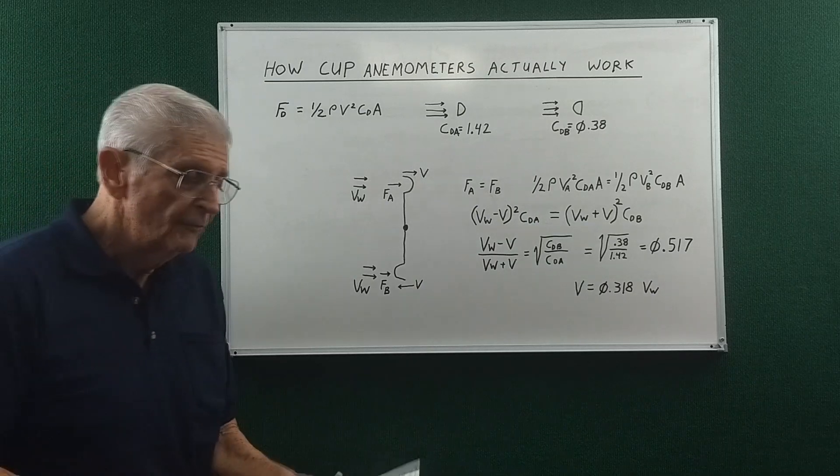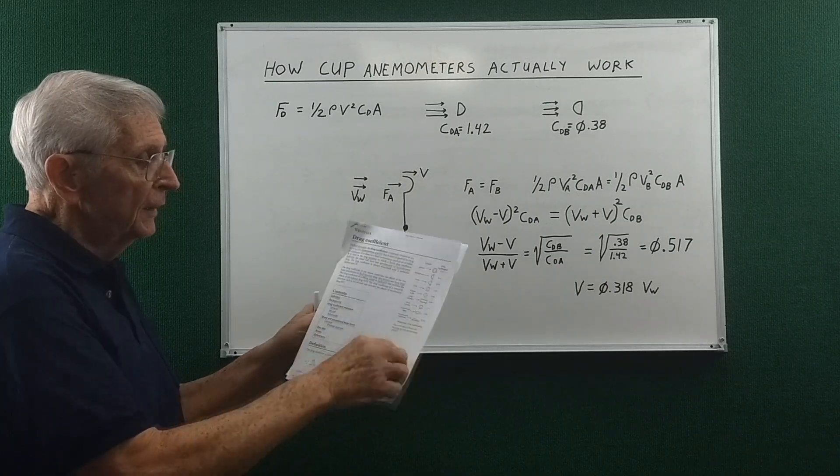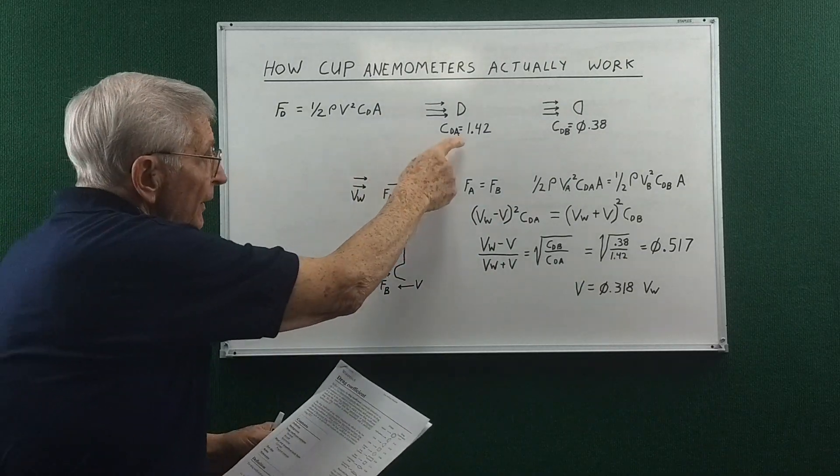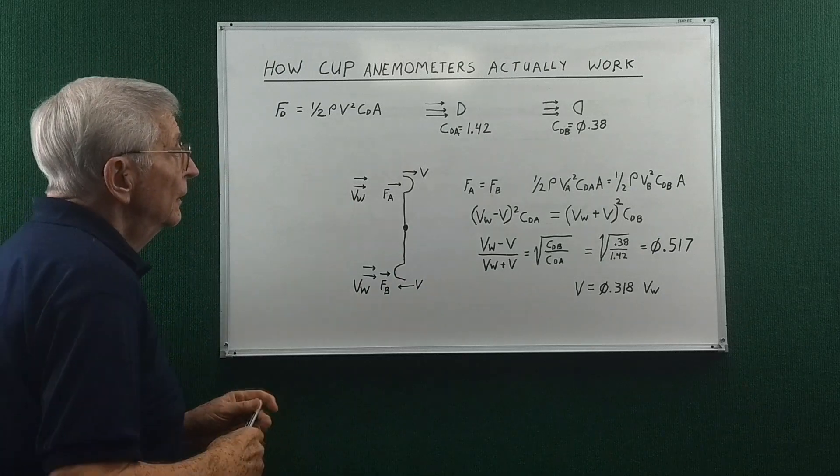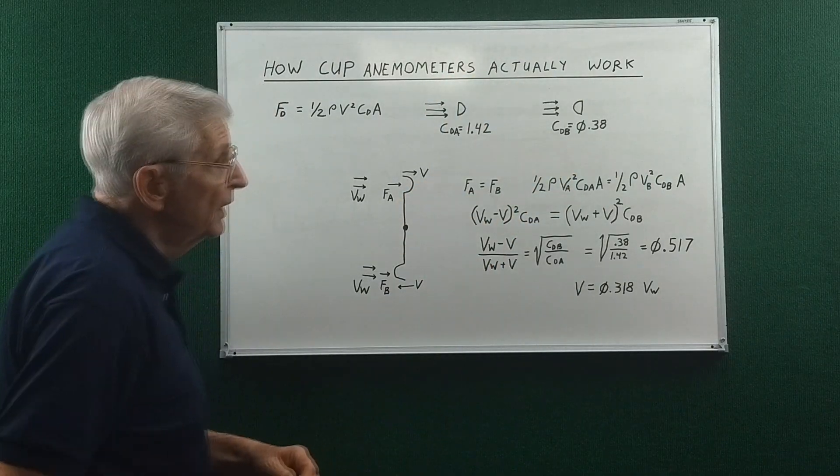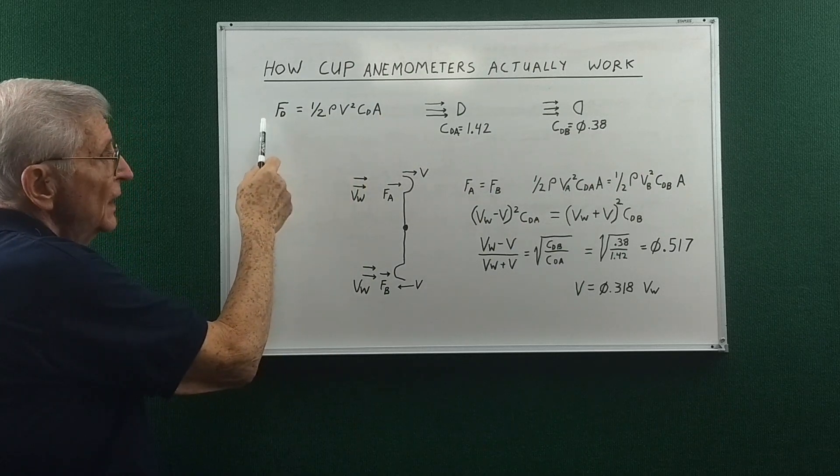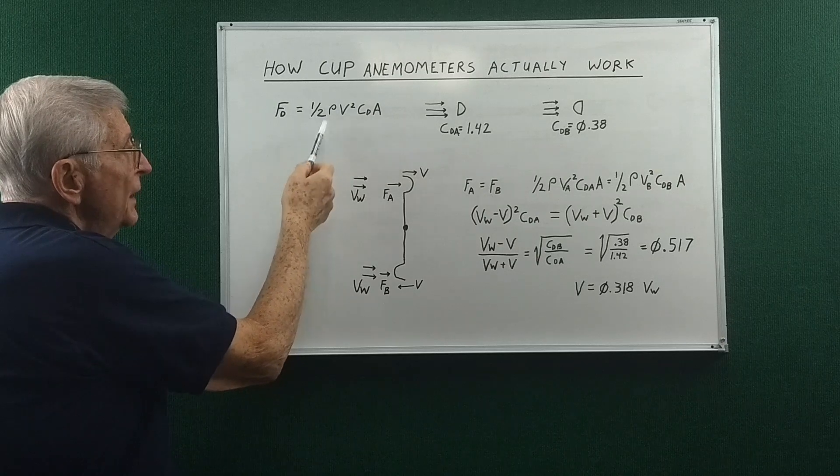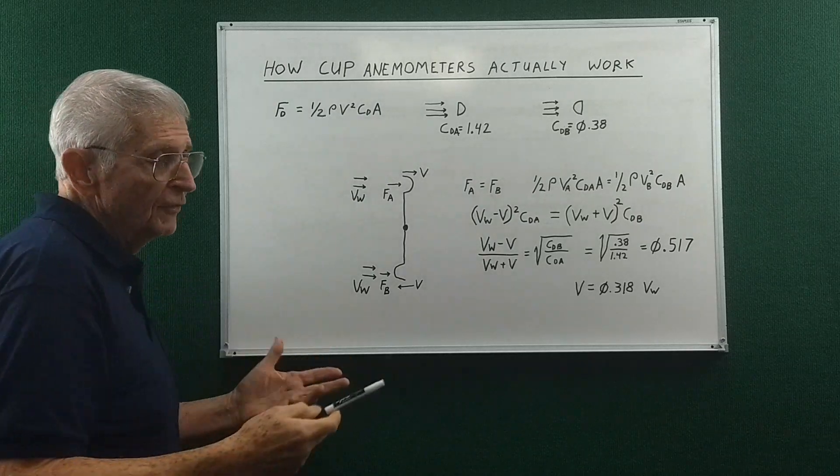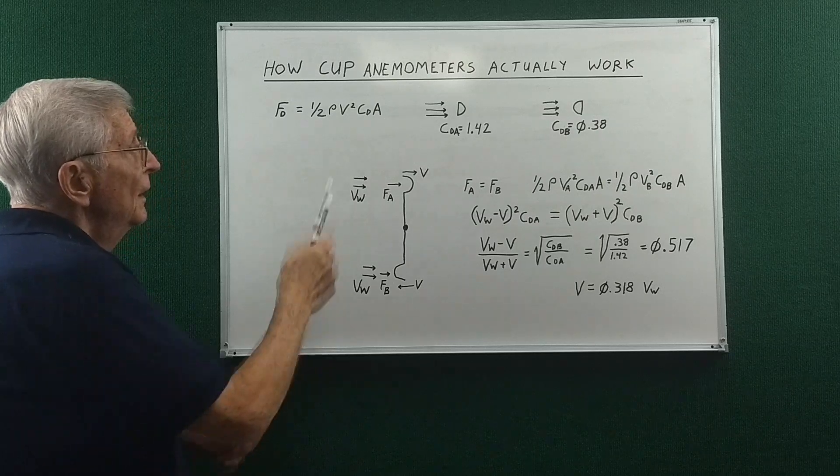So at this point let's resort to some math just in case you're not totally convinced. And below I've put a link to this article called drag coefficient in Wikipedia and it gives drag coefficients for various shapes. In the case of a cup, here are the drag coefficients blowing into the cup. You see a much higher coefficient of drag than blowing into the rounded side of the cup. So the force equation is F = 1/2 ρ. Rho is the density of the air in this case, and that varies with atmospheric pressure and temperature. And then v is the velocity of the air flow, and you see that's squared.